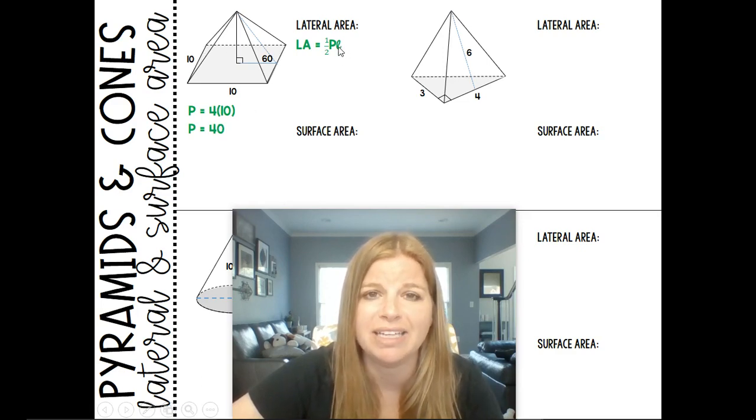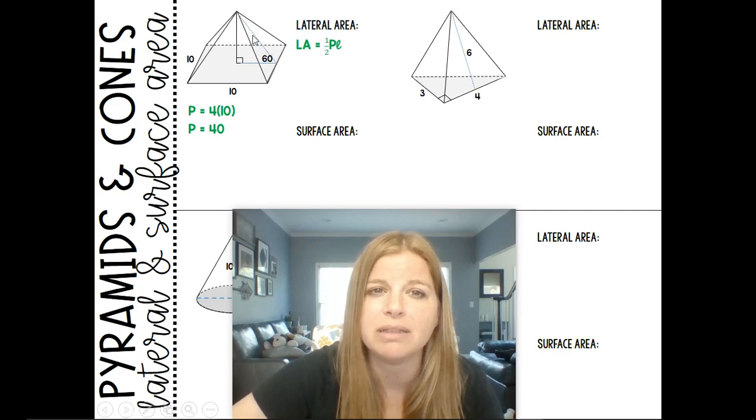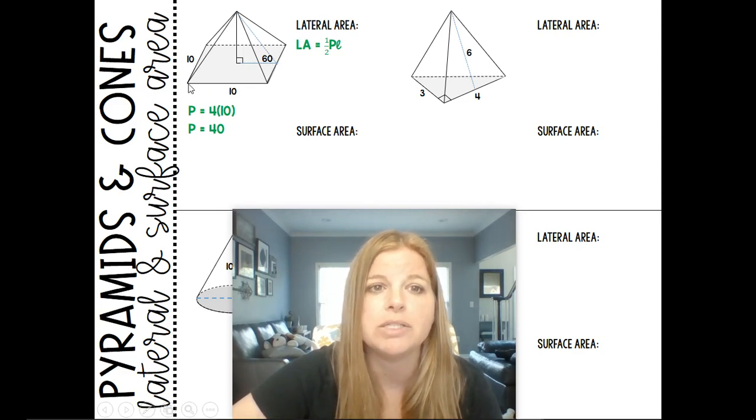The slant height, L. So here I see I actually have a 30-60-90 triangle built into this pyramid with that little 60 degree angle. I'm not given the L the slant height, but I do notice that that's actually the hypotenuse of this 30-60-90. So if the entire side length here is 10, then I know that this length is 5,